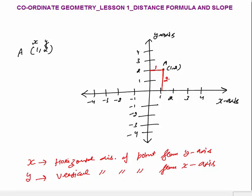So that's how you draw coordinates: x-coordinate is the horizontal distance from the y-axis, y-coordinate is the vertical distance from the x-axis. Let me draw another point, say B at (4, -3). Here x-coordinate is 4, y-coordinate is -3. Horizontal distance from y-axis is 4, vertical distance from x-axis is 3.